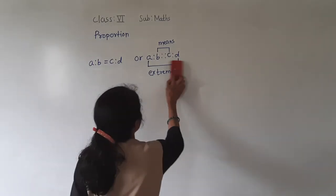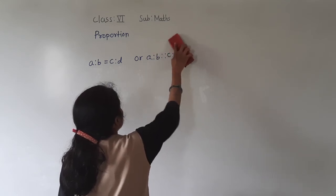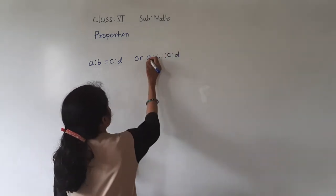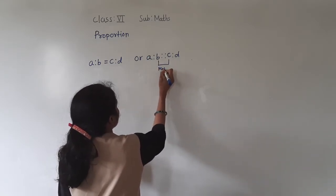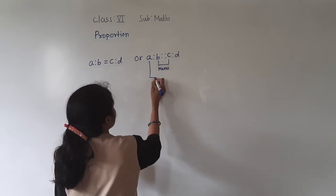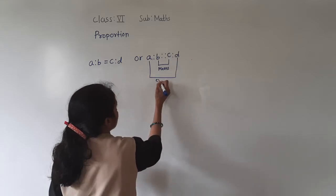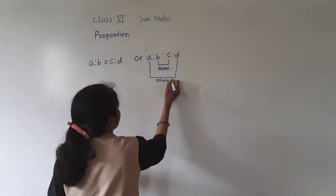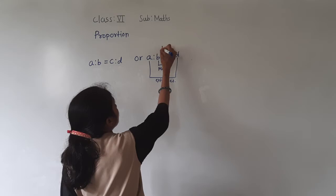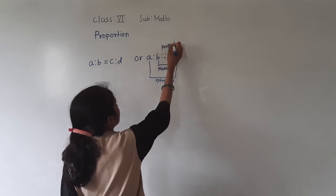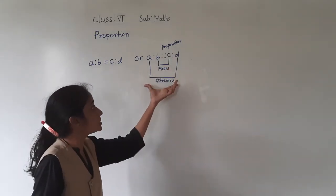See here — I will show you this. These are the means, and these are the extremes: A and D are extremes. B and C are the means, and this symbol represents proportion.